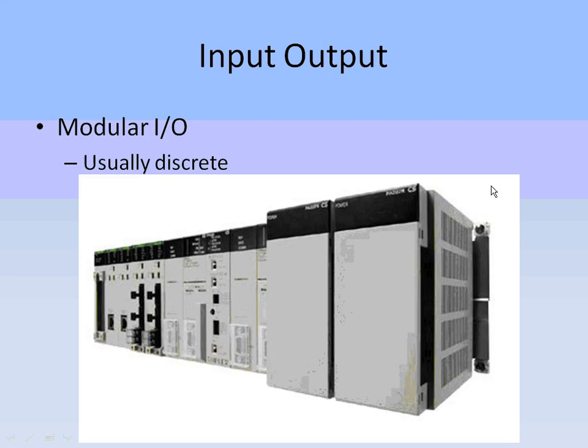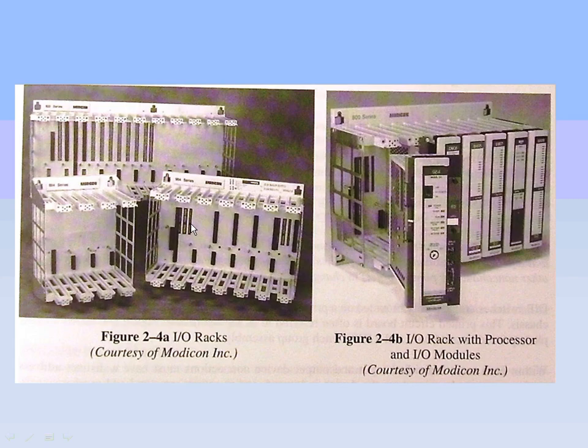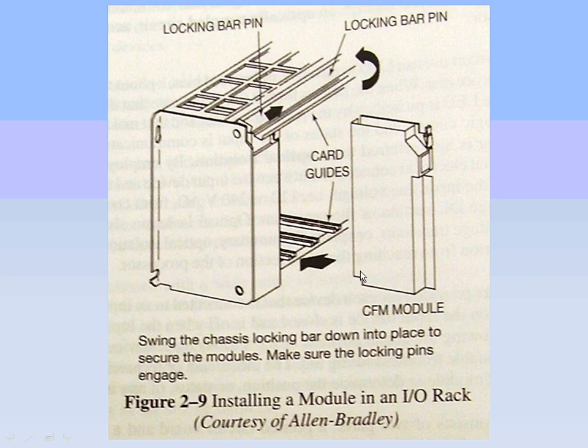And here's a modular input-output type of device where you have separate modules for inputs and outputs in the processor and the power supply. Those are rack-mounted. So you have these slots, also what could be called a card cage, where you have connections on the back that the cards fit into when you slide them in there. And this is an illustration of how this particular one has a bar that locks it in place.